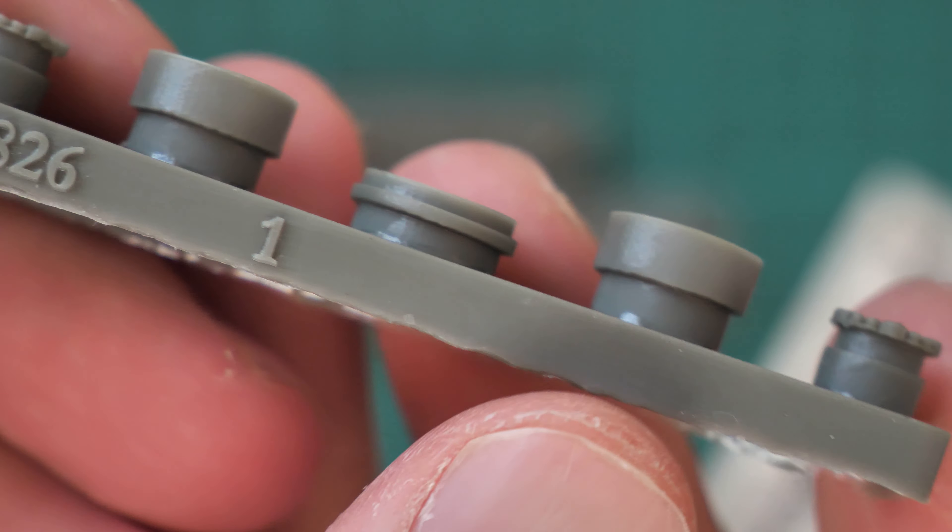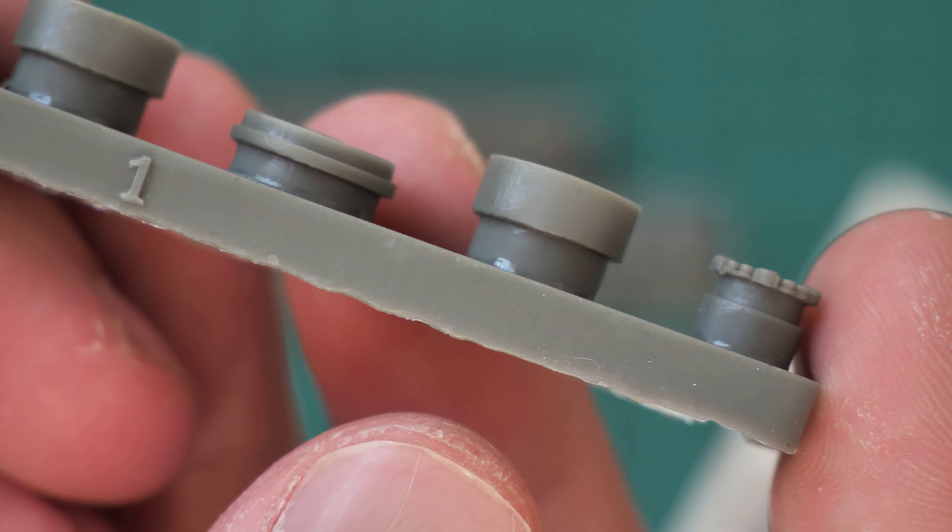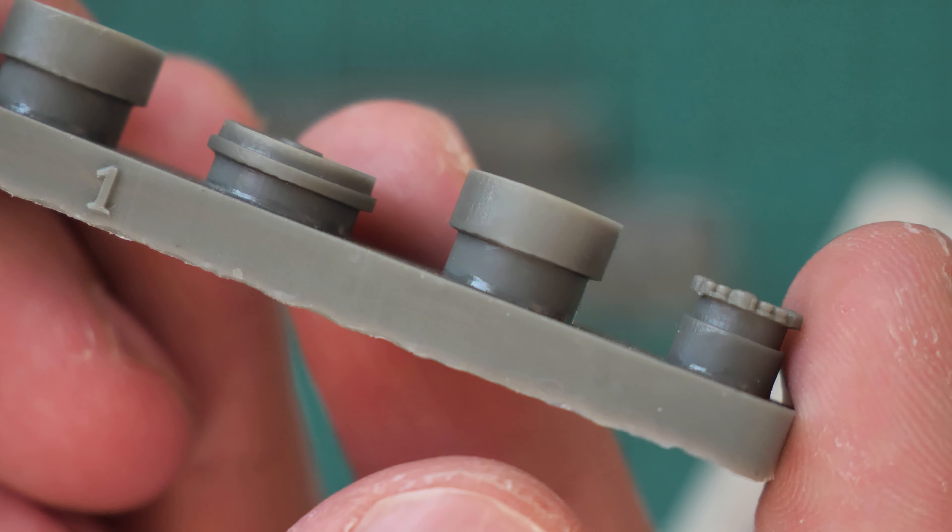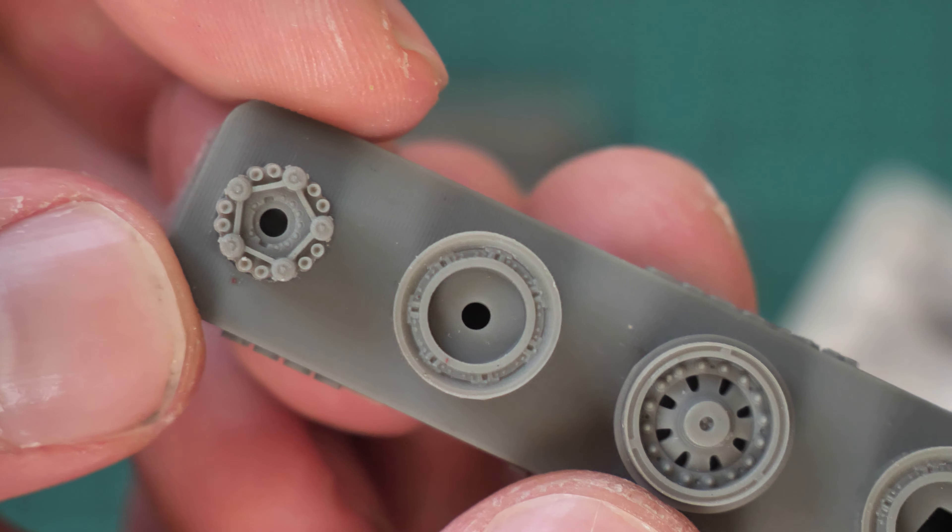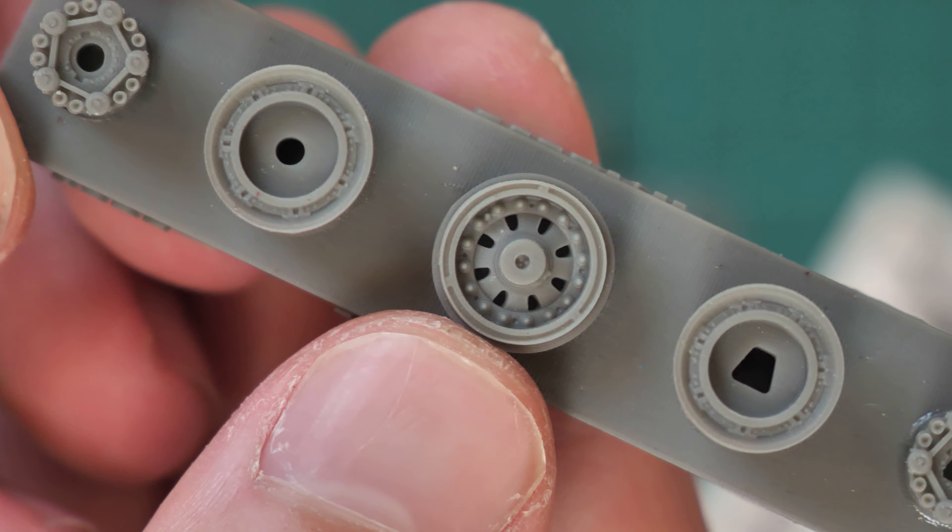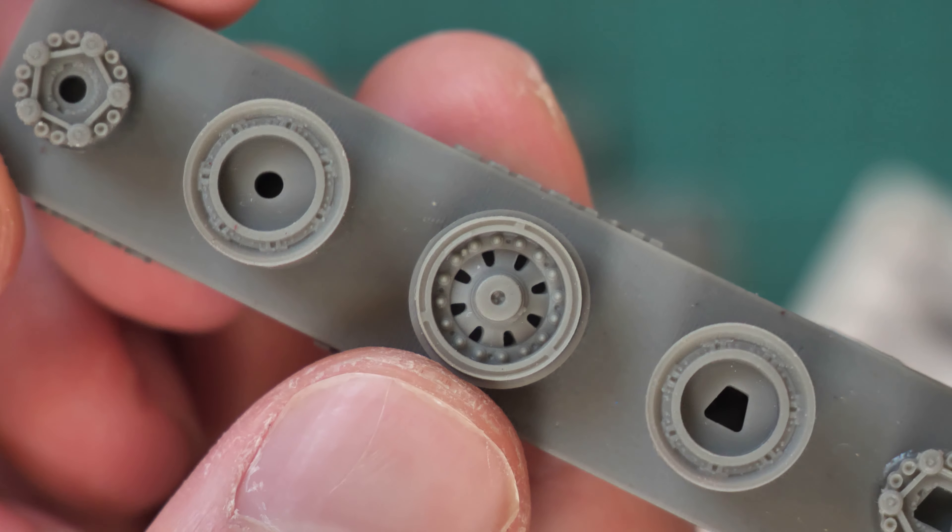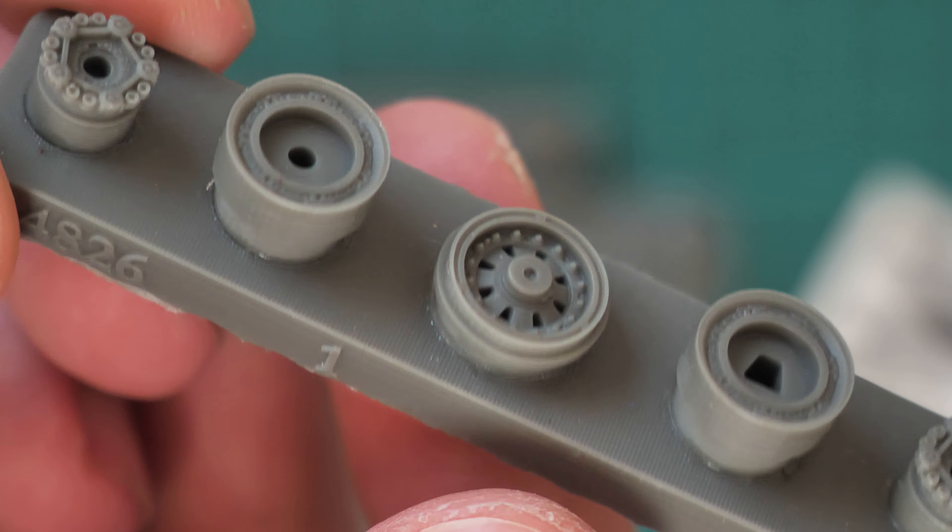Here you can see those wheel rims. Note the attachment points, or let's say the connections to the resin base, are not that thick—they should be more or less easy to cut through. Overall detailing looks convincing and it should be even better with some painting and weathering applied.